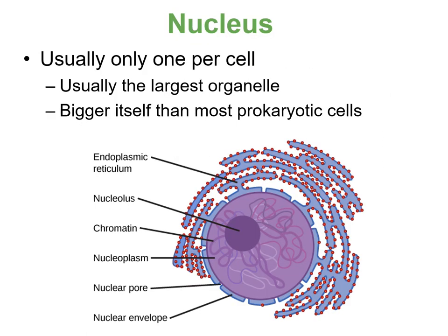One of the major differences in eukaryotes is membrane-bound organelles — especially the nucleus. There is usually only one per cell, and it is the largest organelle. If you're ever looking through a microscope at cells, the nucleus is usually easy to spot — it's typically a darker circle within the cell. It's bigger itself than most prokaryotic cells, which is interesting. It holds all of the organism's DNA — as humans, we have the same setup.